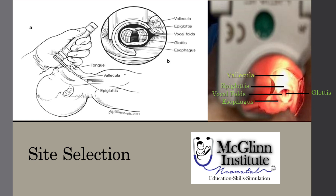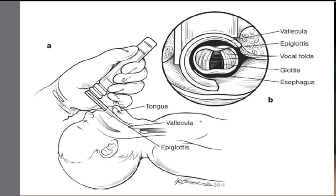The key to properly performing endotracheal intubation is to know your landmarks. Once entering and looking at the glottis, you will see the vallecula where you place your blade, the epiglottis — which is the covering over the trachea to prevent aspiration — your vocal folds or vocal cords, your glottis through which the tube will enter, and below all of that is your esophagus.